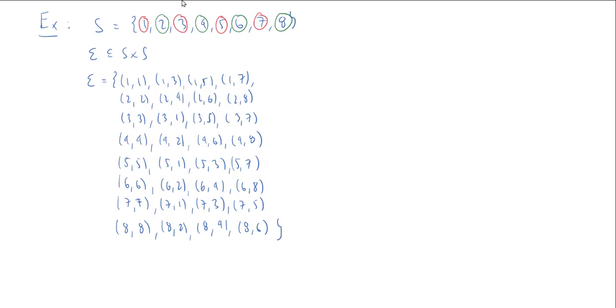So there's only two equivalence classes that I actually get. There's the green class and the red class, the odds and the evens. So S modulo E is actually just equal to the greens, comma, the reds.